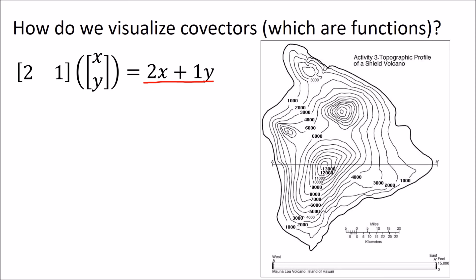How can we visualize a function of two variables that produces one output? This is similar to a problem that map makers face when they want to convey elevation on a two-dimensional sheet of paper. On a topographic map, you basically need to show slopes of mountains and valleys using only a 2D page. Topographers draw curves of constant elevation: the curve labeled 3,000 is everywhere exactly 3,000 feet high, and the curve labeled 2,000 is everywhere 2,000 feet in elevation. Where the lines are stacked densely, the elevation changes steeply; where lines are less dense, the slope is comparatively shallow.